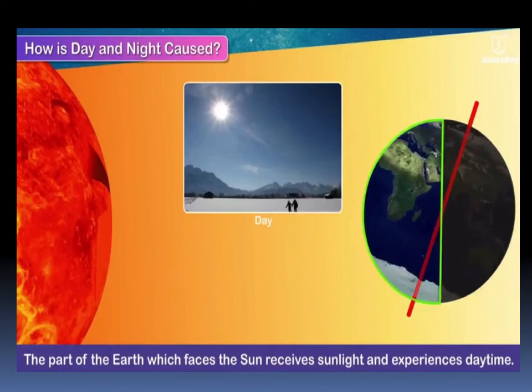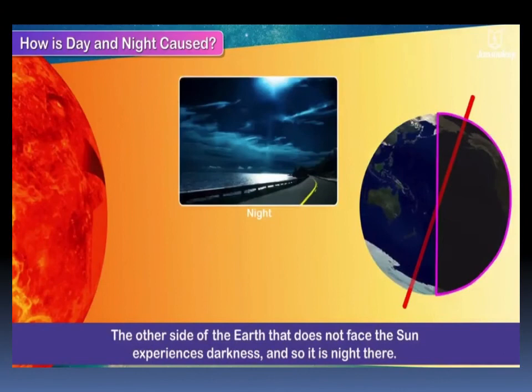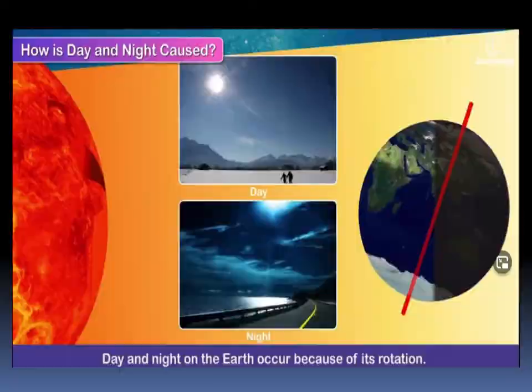The part of the earth which faces the sun receives sunlight and experiences daytime. The other side of the earth that does not face the sun experiences darkness and so it is night there. Day and night on the earth occur because of its rotation.